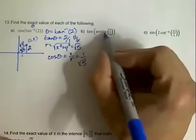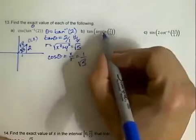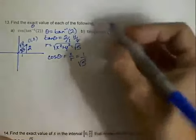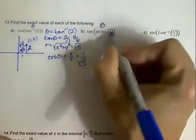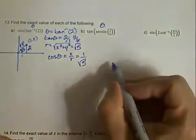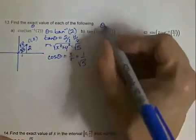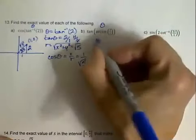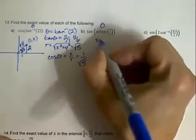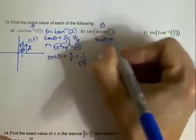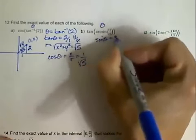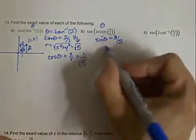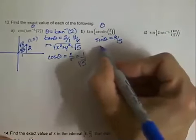Let's do the same thing with this one. Remember that arcsine is the same thing as inverse sine — we're going to make this whole thing equal to an angle. If theta equals the inverse sine of 3 fifths, that means the sine of theta equals 3 fifths.